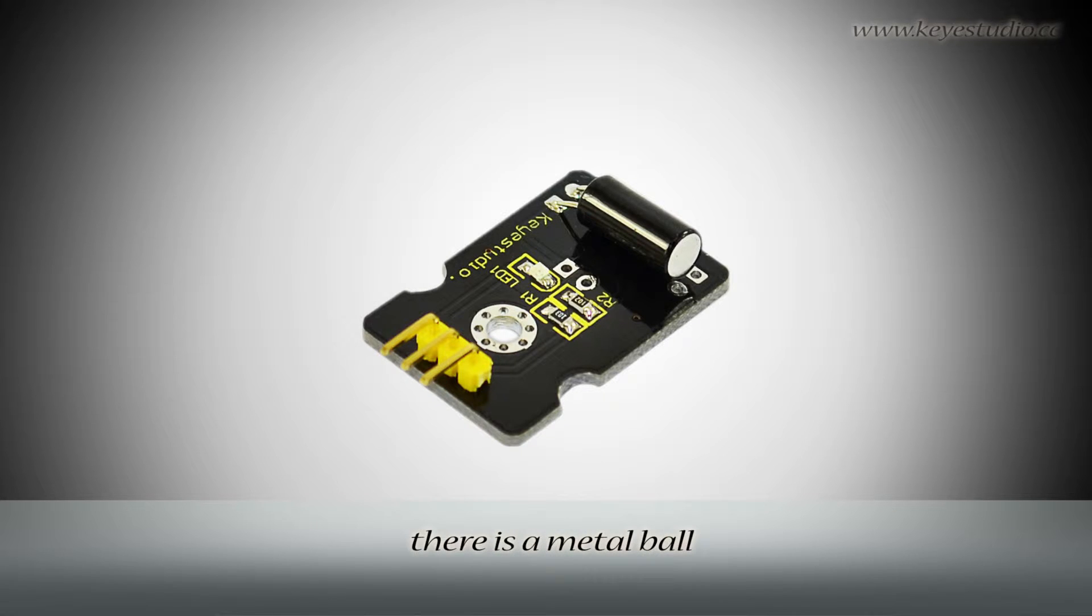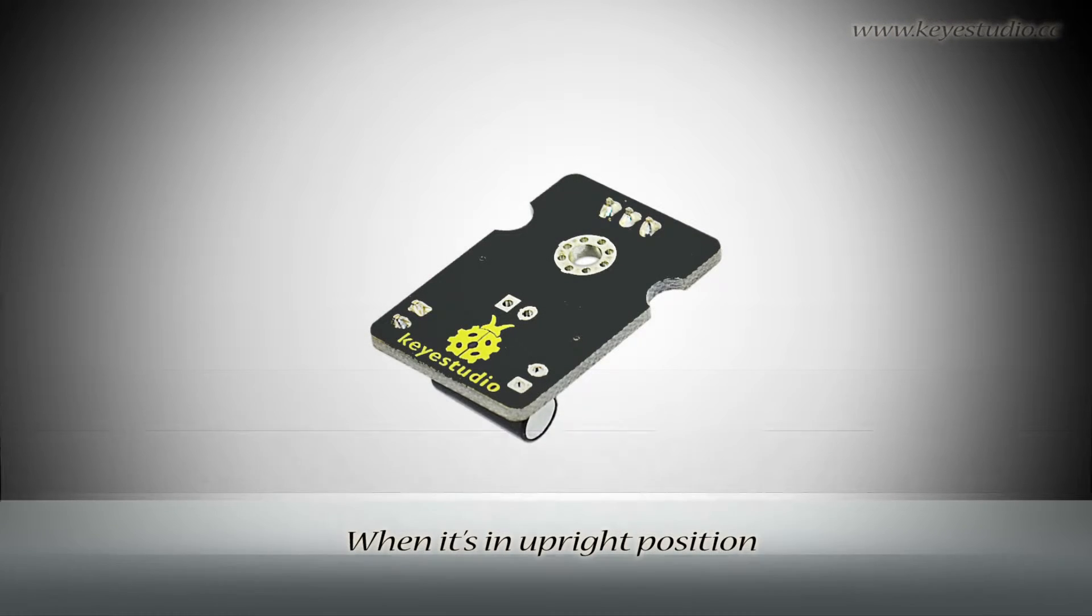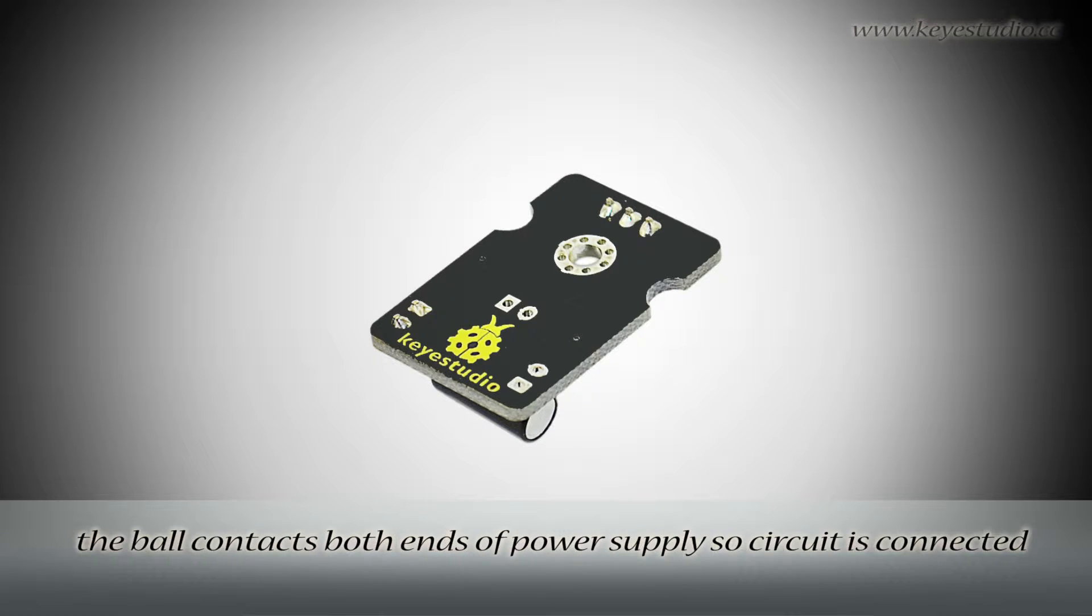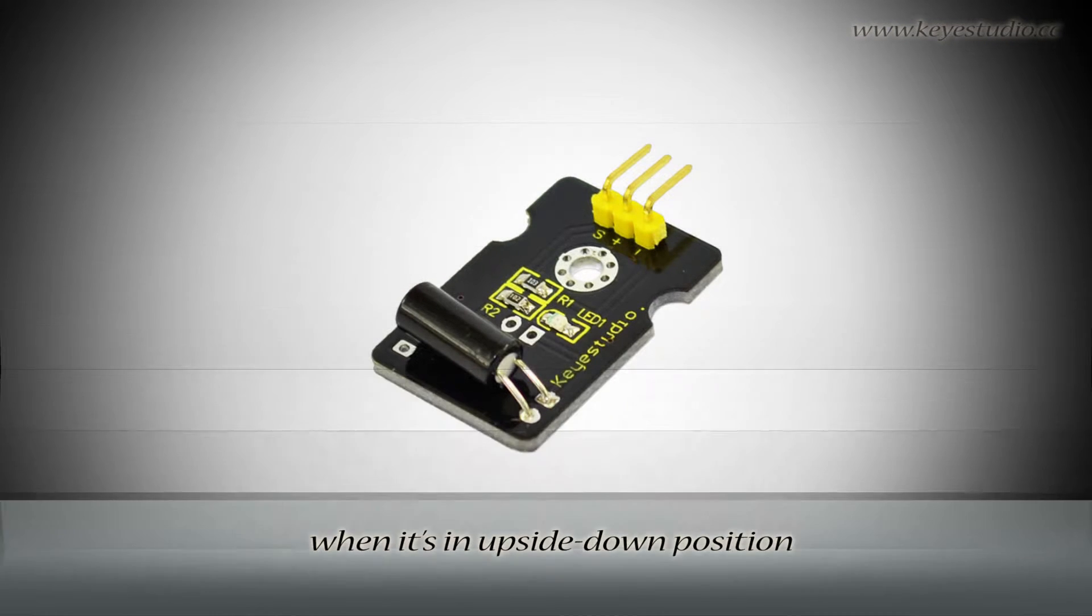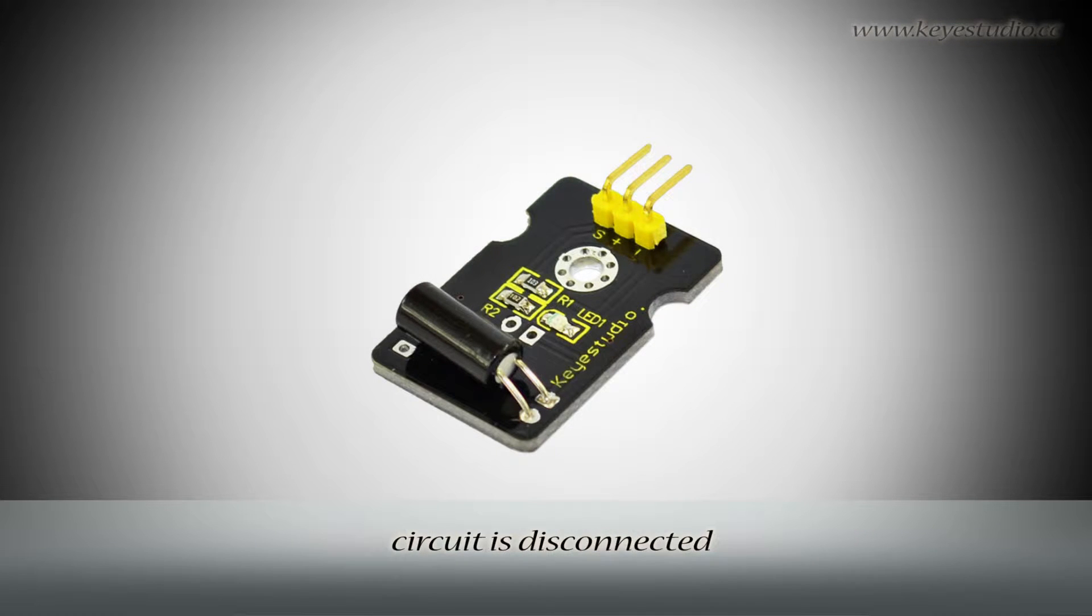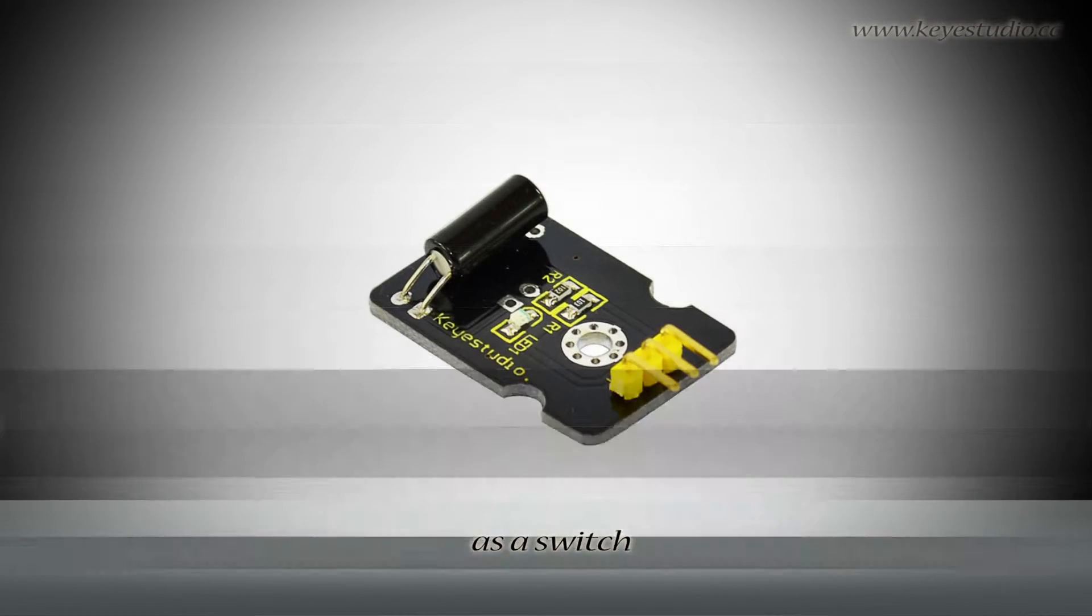Inside the sensor, there is a metal ball. When it's in upright position, the ball contacts both ends of power supply, so circuit is connected. When it's in upside-down position, circuit is disconnected. In this way, the module outputs different signal and functions as a switch.